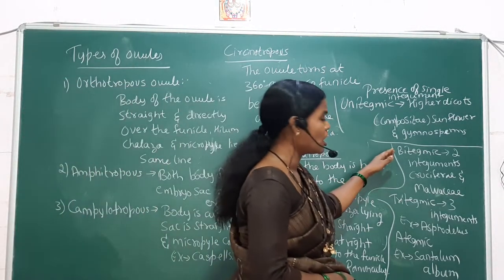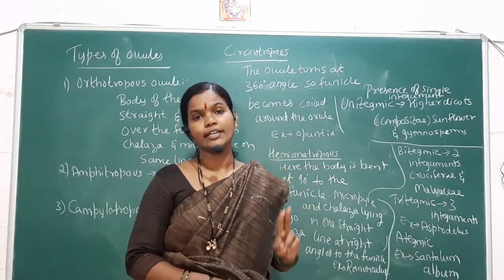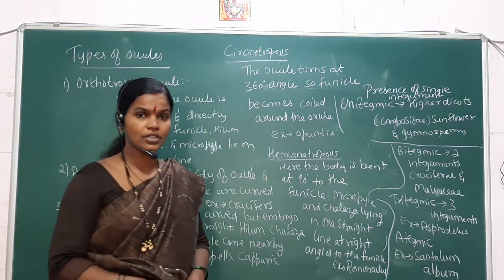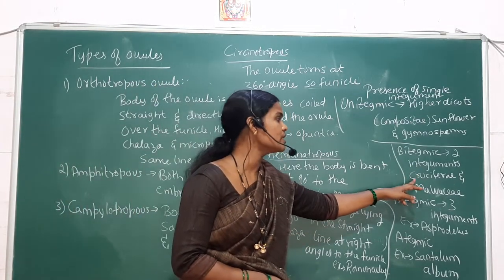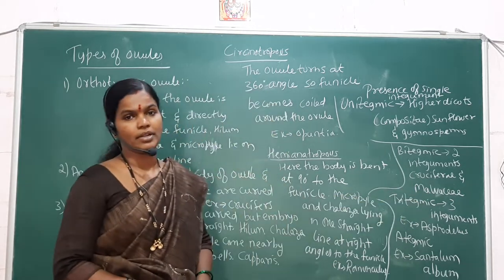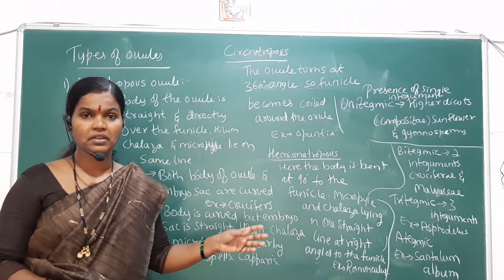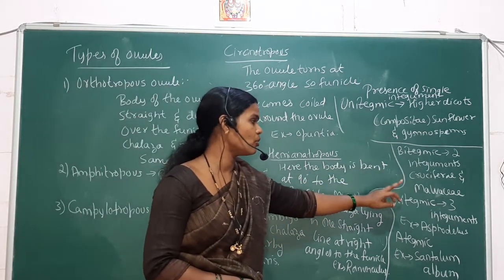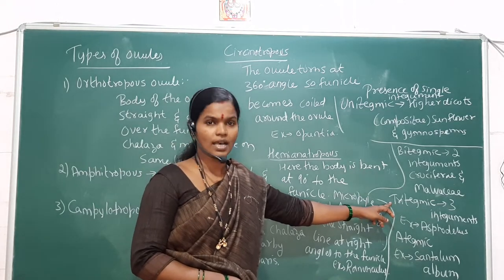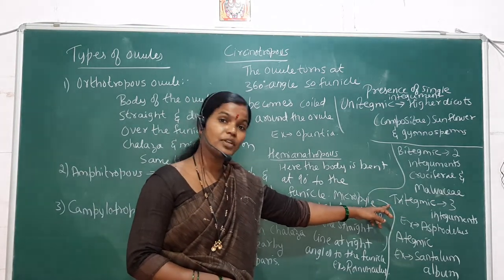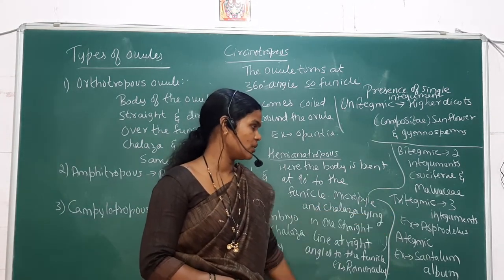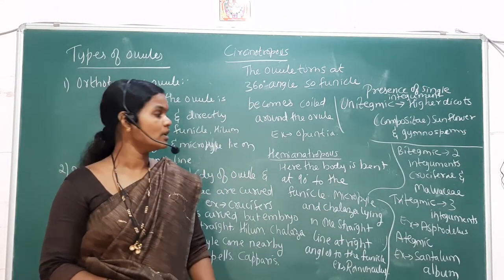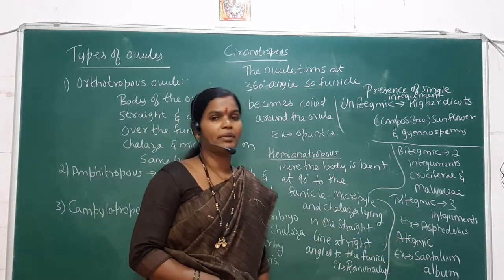The second type is bitegmic, which means the presence of two integuments. Examples include the Cruciferae and Malvaceae families, especially hibiscus. The third type is tritegmic, meaning the presence of three layers of integuments. This is rarely present in angiosperms. The example is Asphodelus.